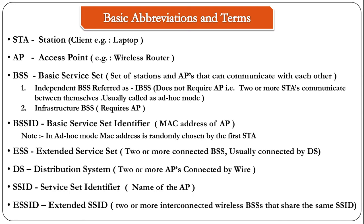Let's start off with the first abbreviation, which is STA, which means station. A station is basically a client which is trying to connect to an access point — a good example could be a laptop or a smartphone. The next abbreviation is AP, which means access point; a good example is a wireless router.